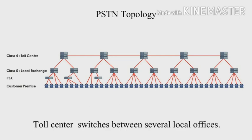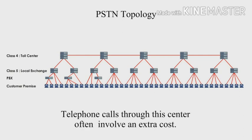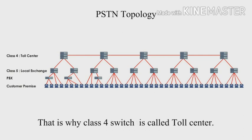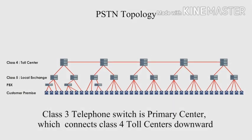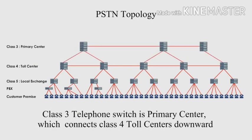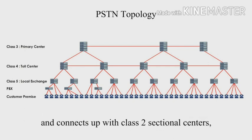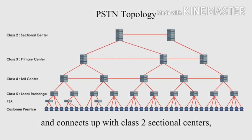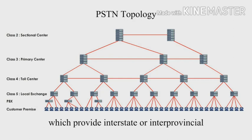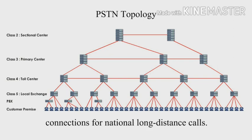The local exchange connects with the backbone of PSTN by communicating with the Class 4 telephone switch, also called the toll center or tandem office. Toll center switches between several local offices, and telephone calls through this center often involve an extra cost — that is why the Class 4 switch is called a toll center. Class 3 is the primary center, which connects Class 4 switches downward and connects up with Class 2 sectional centers, which provide interstate or inter-provincial connections for national long distance calls.